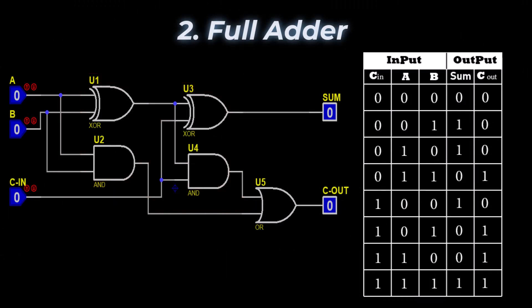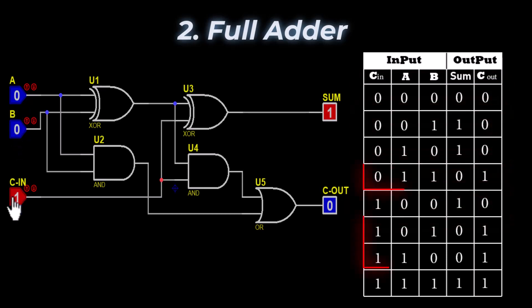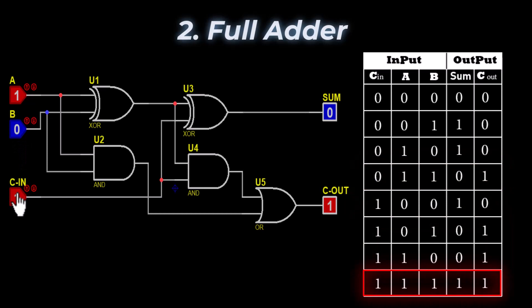The full adder has three inputs — A, B, and carry in — and two outputs: sum and carry out. When all inputs are zero, sum and carry out are both zero. When any one input is one, sum = 1 and carry out = 0. When two inputs are one, sum = 0 and carry out = 1. When all inputs are one, sum = 1 and carry out = 1.